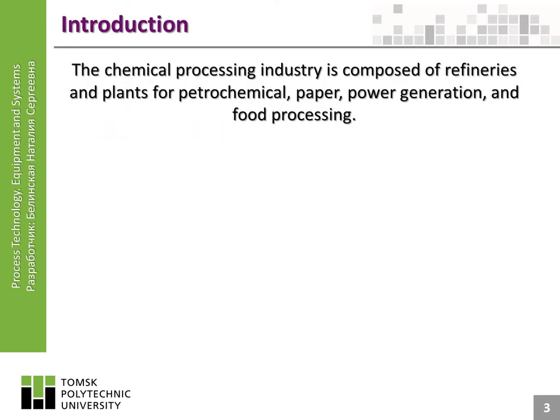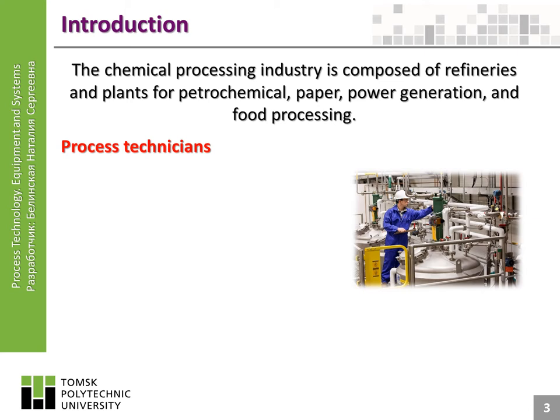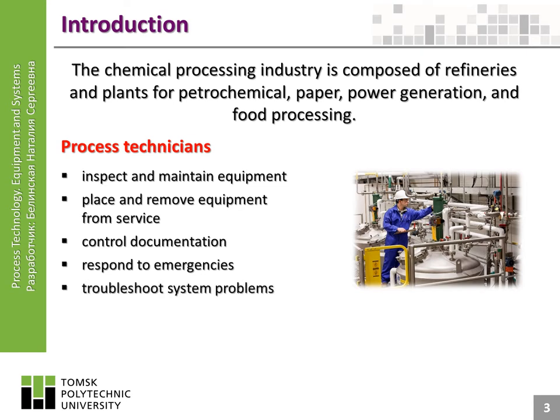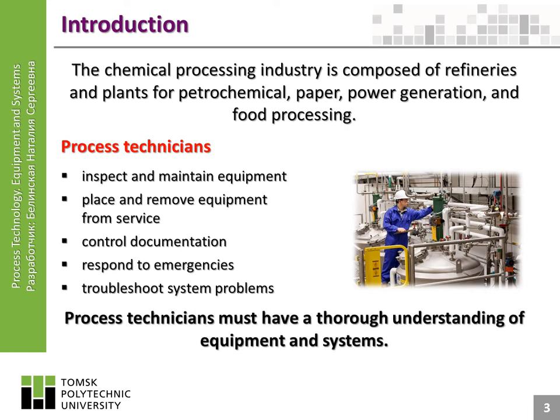The chemical processing industry is composed of refineries and plants for petrochemical, paper, power generation, and food processing. Process technicians inspect and maintain equipment, place and remove equipment from service, control documentation, respond to emergencies, and troubleshoot system problems. Process technicians must have a thorough understanding of equipment and systems.